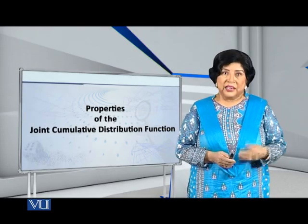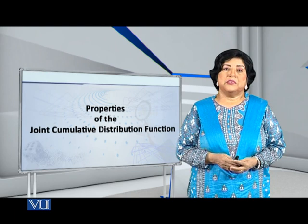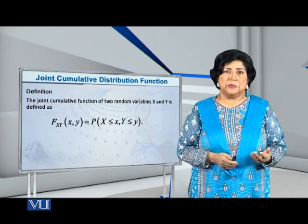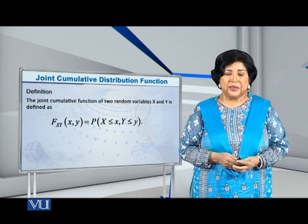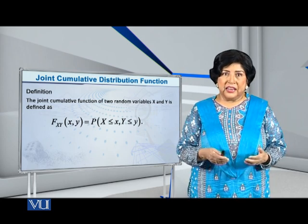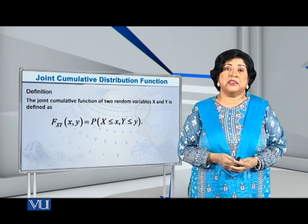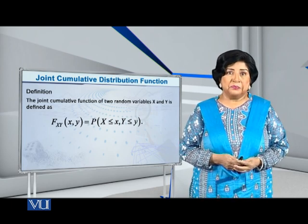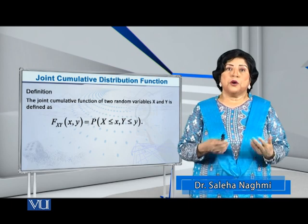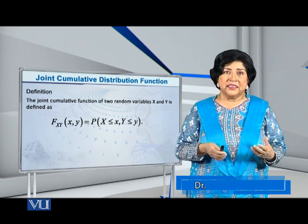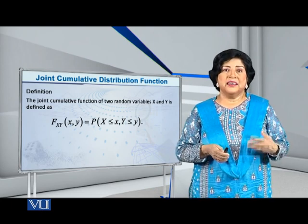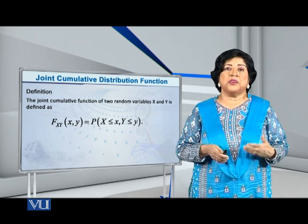Dear students, I would like to present to you the properties of the joint cumulative distribution function. In the case of two random variables, capital X and capital Y, you already know that the joint CDF is given as follows. Capital F of the random vector XY at the point small x, small y is actually the probability of capital X being less than or equal to small x and capital Y being less than or equal to small y.